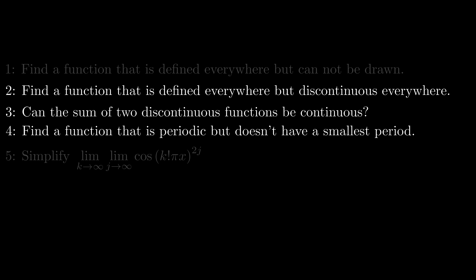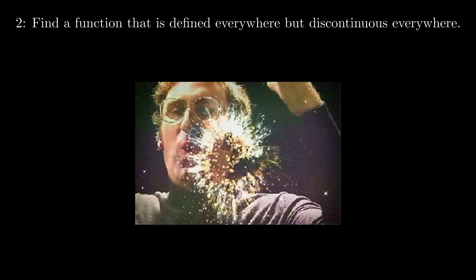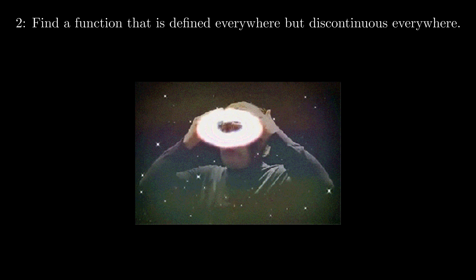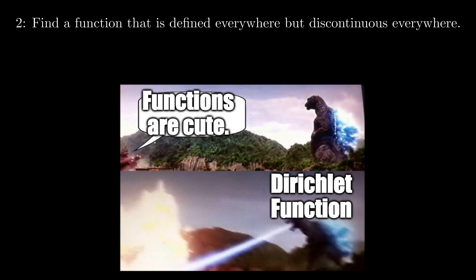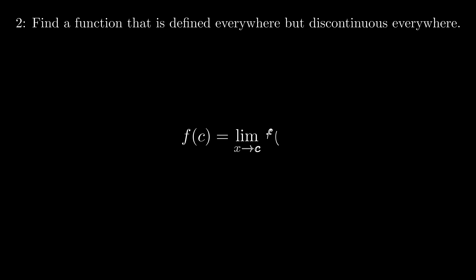So the Dirichlet function is the answer to our first question: a function that cannot be drawn. Moving on to the second question — as you may guess, the answer is still the Dirichlet function. Without knowing it, it is really hard to imagine a function defined everywhere but discontinuous everywhere. The Dirichlet function is truly the king of counterexamples and the Godzilla of anti-intuition. Recall that a function is continuous at a point c when the value of f(c) equals the limit of the function as x goes to c.